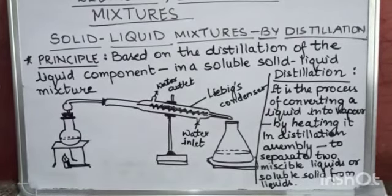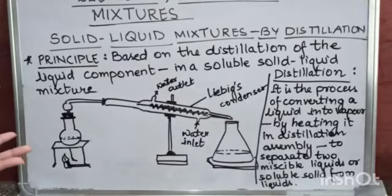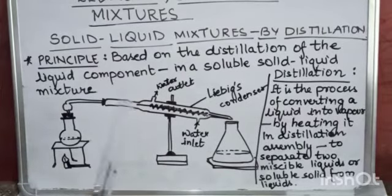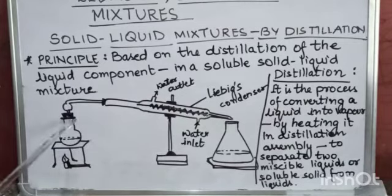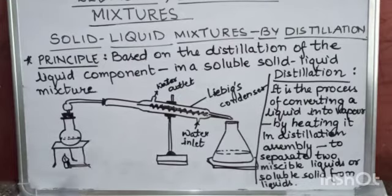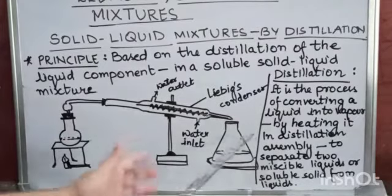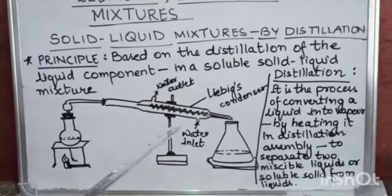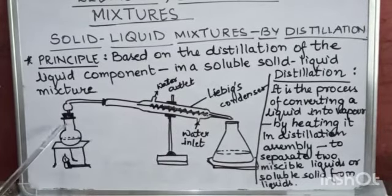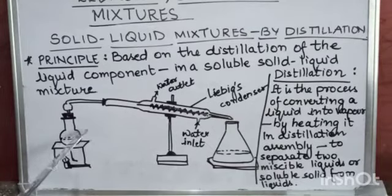We can also separate lead nitrate from water, potassium chloride from water, and even acetone from water. In this distilling flask, suppose we have impure water and we have to collect pure water in another flask. The impure water collected in the distilling flask is heated first.